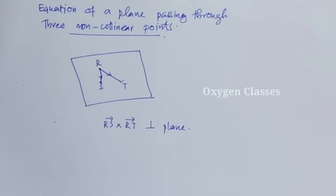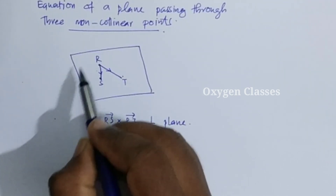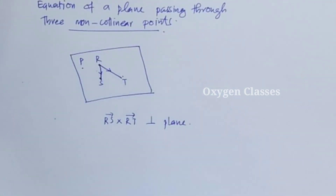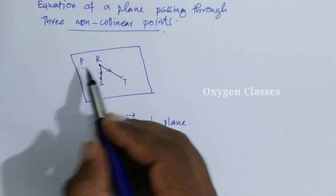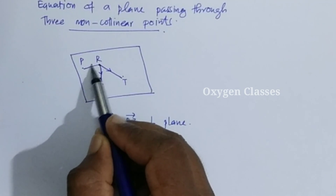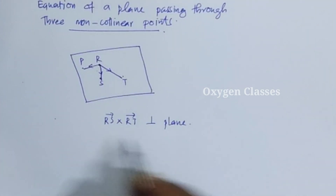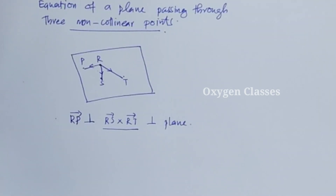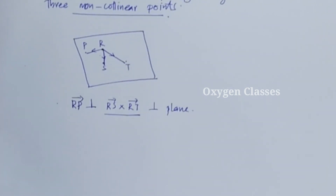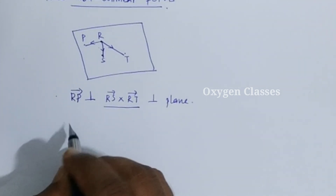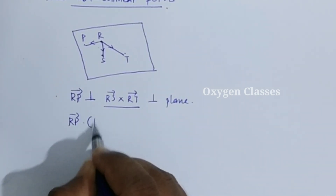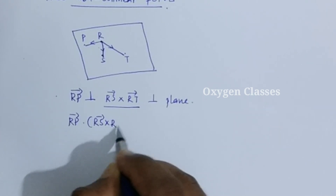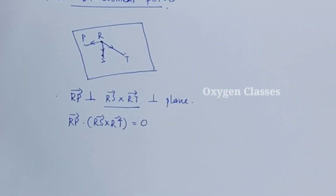We have the perpendicular vector. Now let P be a general arbitrary point in the plane, so we have vector RP. Since RP lies in the plane and the plane is perpendicular to RS cross RT, we have RP dot (RS cross RT) = 0.